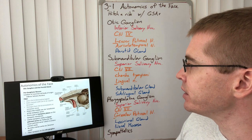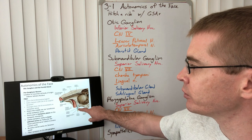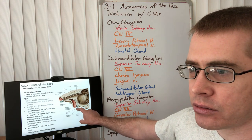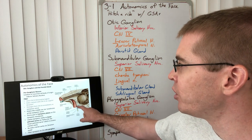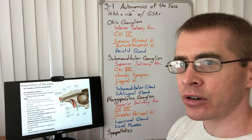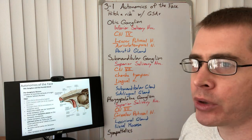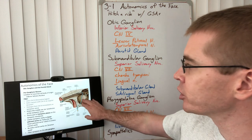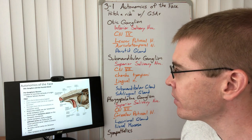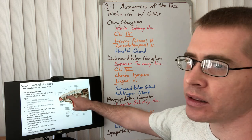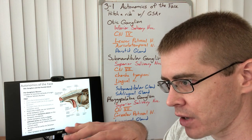Following that fiber: at the jugular foramen, these GVE fibers exit the glossopharyngeal nerve just after leaving the foramen and form a small nerve called the tympanic nerve. The tympanic nerve enters the middle ear via the tympanic canaliculus, where these GVE fibers form a portion of the tympanic plexus, which covers the inner portion of the tympanic membrane.